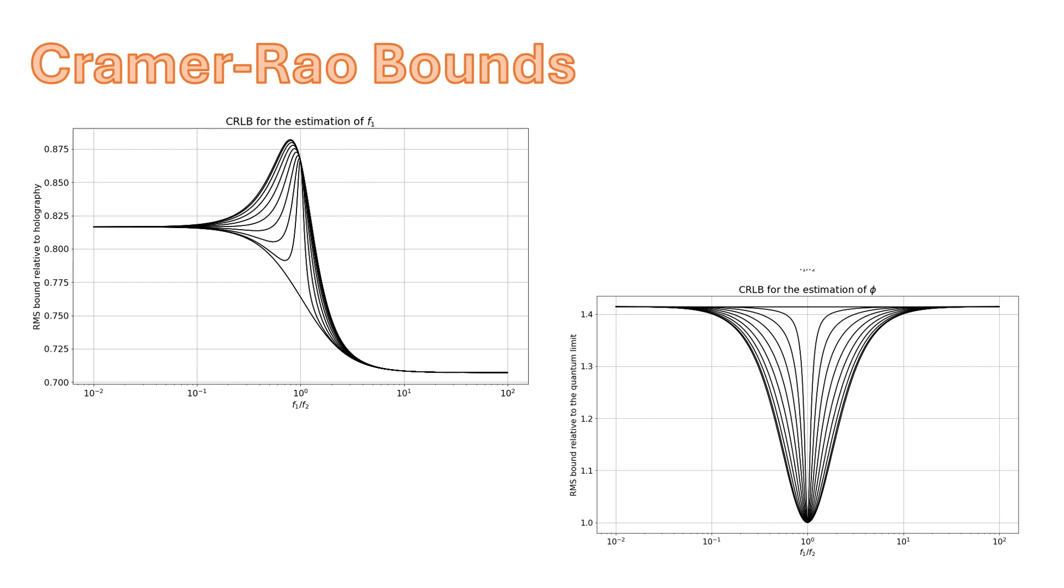For F1, it depends on the ratio of F1 to F2, and so you see this set of curves for various values of the relative phase. Then we have this Kramer-Rao bound for estimation of phi, similarly for various values of phi itself. It's actually pretty accurate for this value of H. And if we make H more sophisticated, we can get closer and closer to the fundamental quantum limit.